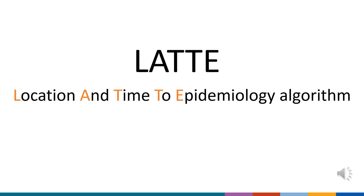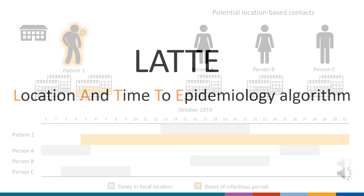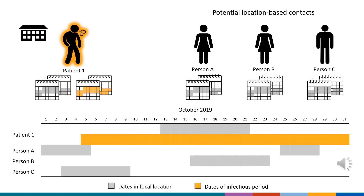To facilitate this process, CDC created LATTE, the Location and Time to Epidemiology algorithm. LATTE can rapidly quantify the timing and duration of overlaps between persons at multiple locations, including identifying overlaps that occurred during a patient's infectious period when TB transmission could have occurred. This information can help public health officials to quickly and reliably identify and prioritize contacts for follow-up.